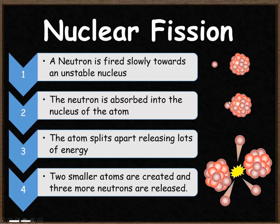It makes it even more unstable. The atom then splits apart releasing lots of energy. So it splits into two smaller pieces. Two smaller atoms are created and three more neutrons are released.